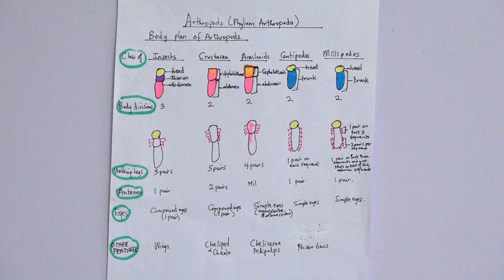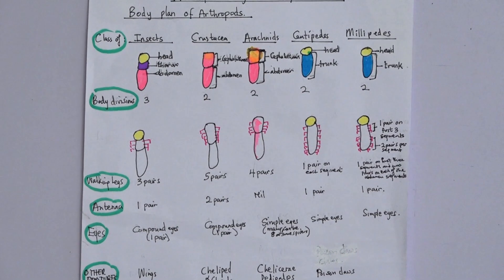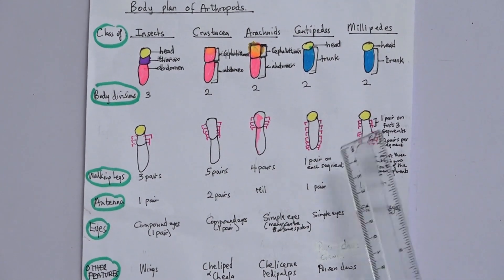Centipedes have one pair of walking legs on each segment of the body. Millipedes have one pair of legs on the first three segments, while the rest of the body has two pairs of walking legs per segment. So the first three segments have one pair each and the rest have two pairs — that's how you distinguish a millipede.